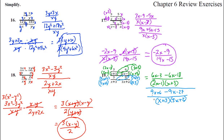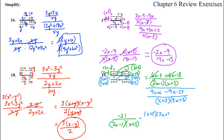The top fraction is in green, the bottom fraction in blue — now we can divide them. The 6x minus 3 minus 6x minus 18 terms cancel out, leaving negative 21 over 2x minus 1 times x plus 3. We multiply by the reciprocal of the bottom fraction: x plus 3 times 3x plus 2 goes on top. And 9x plus 6 minus 27 gives negative 21 on the bottom.